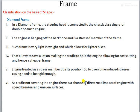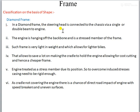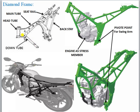The first is the diamond frame. In the diamond frame, the steering head is connected to the chassis via a single or double beam to the engine. This is the down tube and this is the head tube. From the head tube, a single tube goes towards the engine — in this empty space the engine will be there. So only a single tube is going towards the engine.